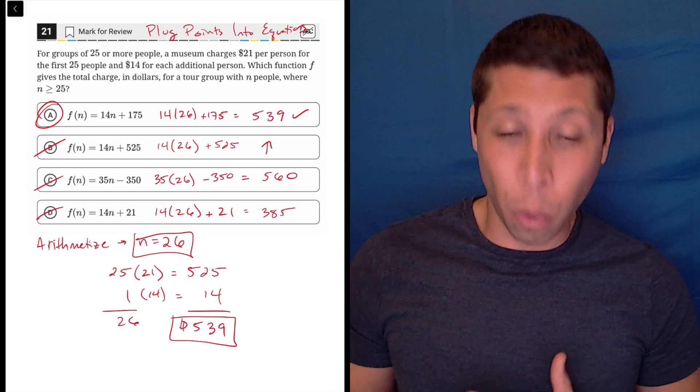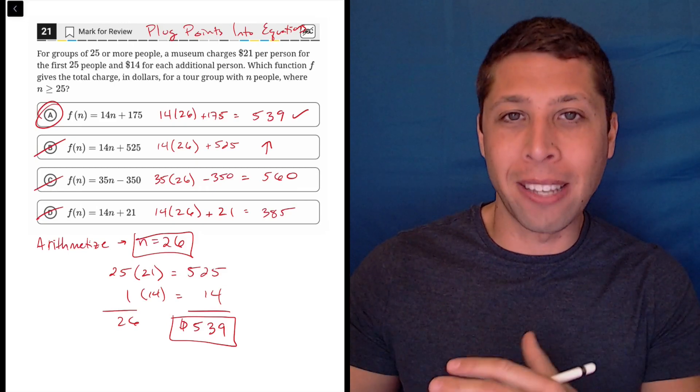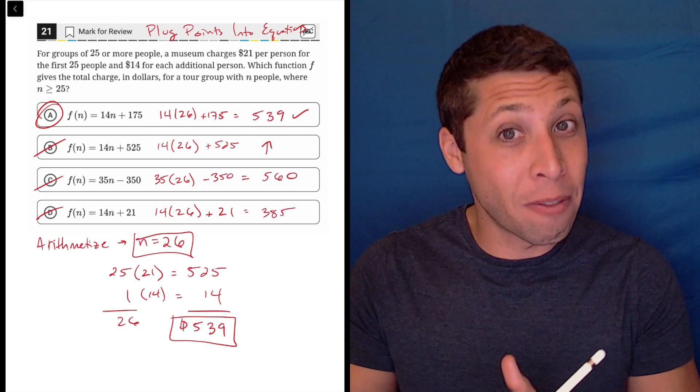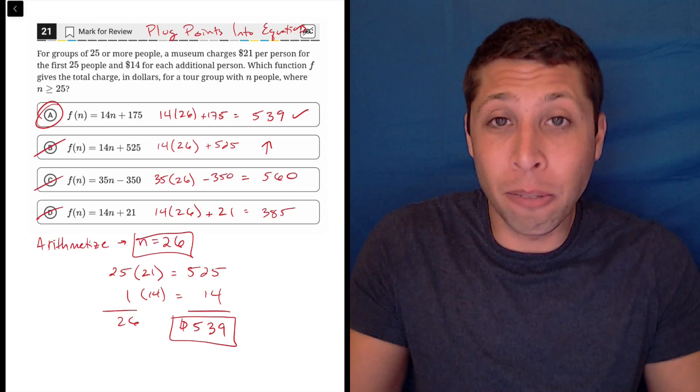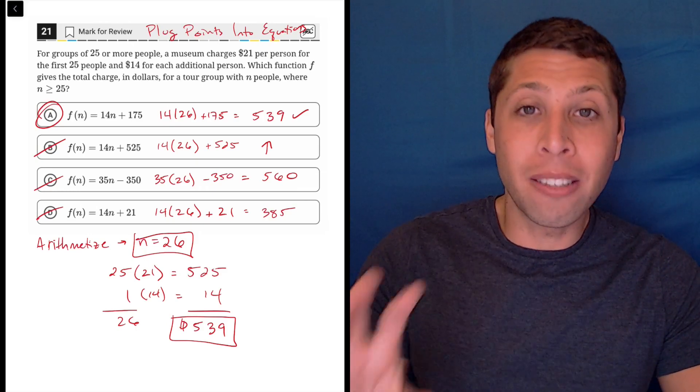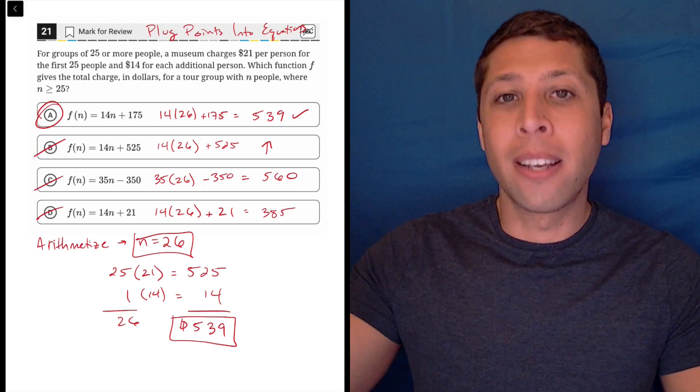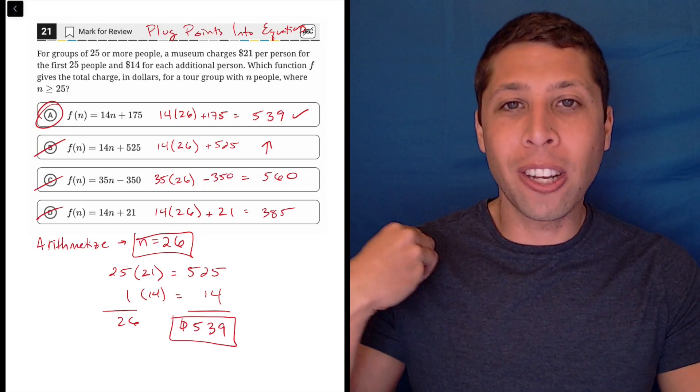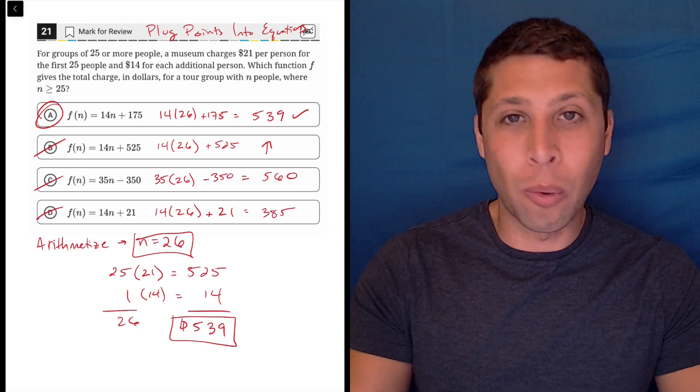Now, if multiple answers worked, I might need to engineer myself a new tour group, maybe 27 people, maybe 30 people, whatever. I could make a choice. But the point is no matter what, I am not trying to interpret the equation. I am just letting the story tell me what to do.